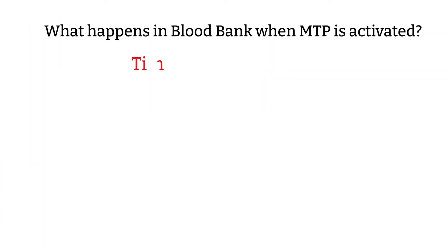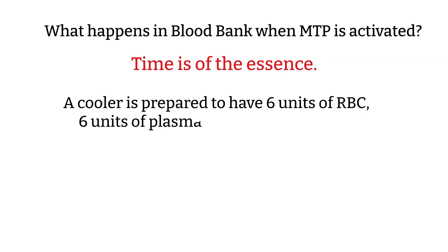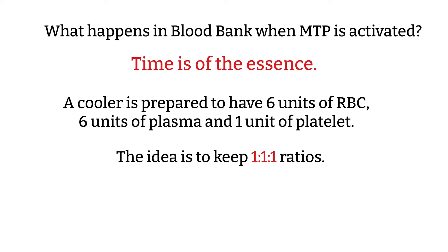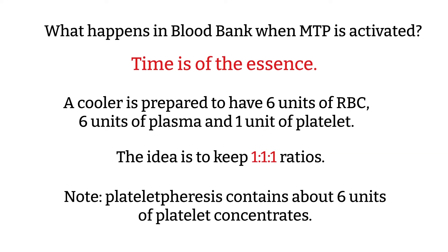What happens in the blood bank when MTP is activated? When an MTP is activated, these will be our priority — it will be an all-hands-on-deck situation. We would try to prepare red blood cells, plasma, and platelets for the patient as fast as possible. In my hospital, a cooler would be ready in 10 minutes and it consists of 6 units of RBCs, 6 units of plasma, and 1 unit of platelets. The ideal is to keep a 1 to 1 to 1 ratio. This appears to be the best substitute for fresh whole blood. Note that 1 unit of platelet apheresis contains about 6 units of platelet concentrate. Therefore, 6 RBCs, 6 plasma, and 1 platelet is equal to 1 to 1 to 1.